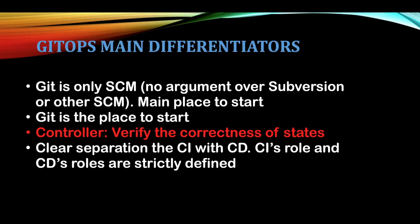Here are the main differentiators of GitOps. Git is the only source control management — no argument over server region or other source control systems; Git is the place to start. It has the concept of a controller that verifies the correct desired state. There is also a clear separation between CI and CD, and the roles of continuous integration and continuous deployment are strictly defined.